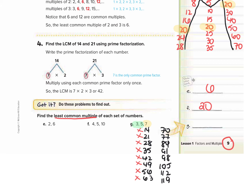Now let's check three and five. Three and five don't both go into 70 — three definitely doesn't. They don't both go into 77, 84, 91, or 98. Let's check 105: 105 divided by three is 35, so three does go into 105, and 105 divided by five is 21, so five does go into 105 also. We know seven goes into it because 105 is a multiple of seven. So this is the first number that three, five, and seven all go into, making 105 our least common multiple.